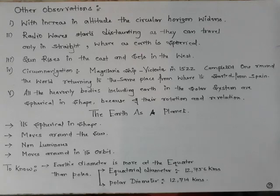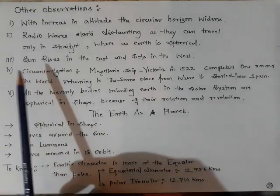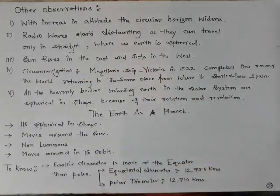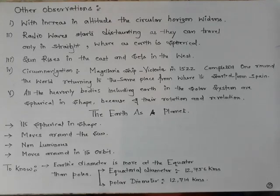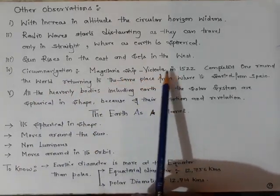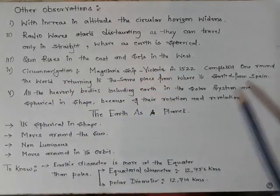The Sun rises in the east and sets in the west, and you can feel as if the Sun is moving from east to west in a circular pattern. This also proves that the earth is not flat but spherical in shape. Circumnavigation — Magellan's ship Victoria completed one round of the world, returning to the same place in Spain from where it started, which also proves that the earth is not flat but a sphere.